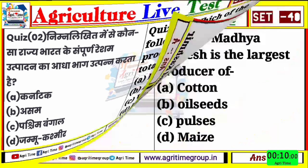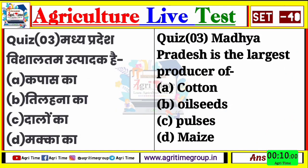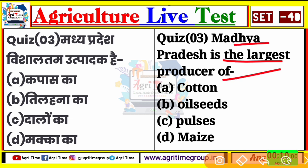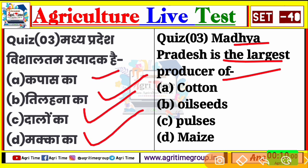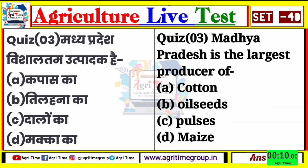बढ़ते हैं अगले question के ओर quiz number three। यह रहा आपके screen पर - मध्यप्रदेश विलसाल कम उत्पादक है, Madhya Pradesh is the largest producer of. Options दिये हैं: कपास, तिलहन, दालें, या फिर मक्का - cotton, oil seeds, pulses और maize। Comment कीजिए, quiz three का right answer क्या होगा?